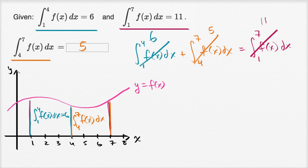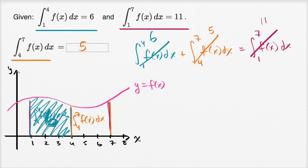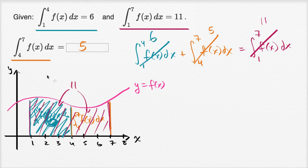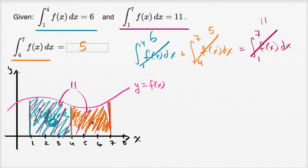Another way to think about it: if this region from one to four has an area of six, and the whole region has an area of 11, so that plus that has an area of 11, then the stuff that we don't know — this orange region — is going to be 11 minus six. So this region right over here is going to have an area of five.